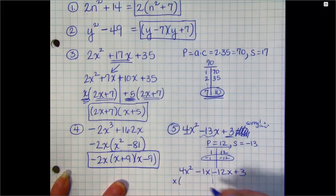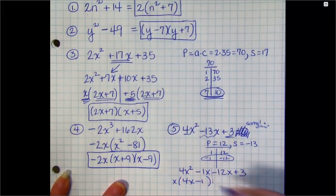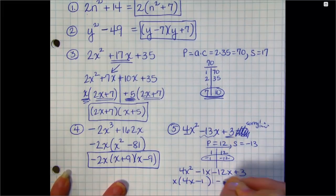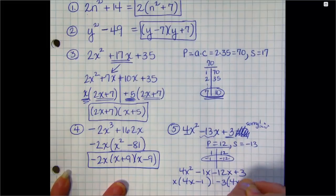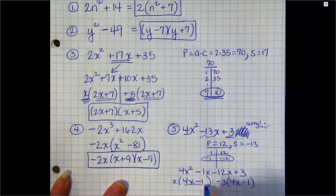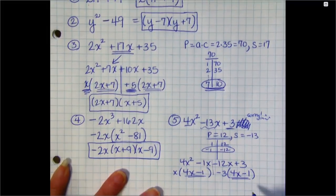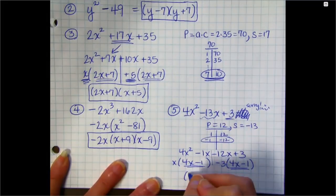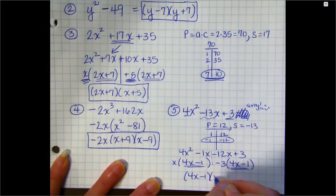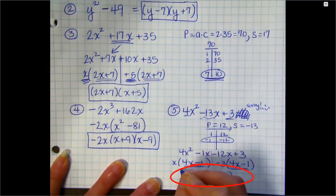Split again. Take out a common x. We're left with 4x minus 1 on the left. Take out a negative 3 on the right. And we're left with that same 4x minus 1. That has to be the same. That's your new common factor. So my factors now are 4x minus 1 and x minus 3.